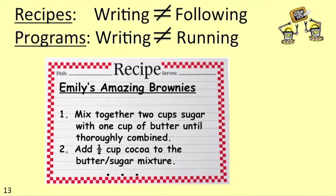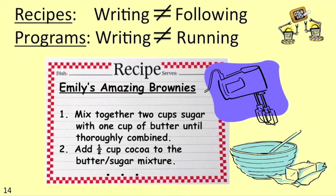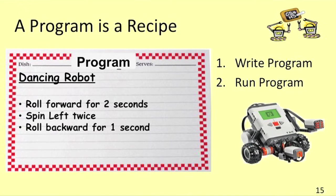My friend Emily wrote me out a recipe for her amazing brownies, but unfortunately just having the recipe isn't the same thing as having the brownies. I need to pull out my cooking hardware — that is my bowls, my mixer, my pans and so on — and carefully follow the instructions in Emily's recipe before I get the brownies. Similarly, in order to get my robot to do something, I have to write a program and then tell my robot to run the program. In other words, I'm telling my robot to follow the instructions.